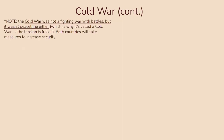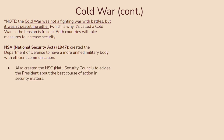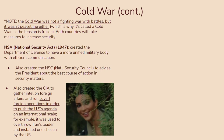The Cold War was not a fighting war with battles, but it wasn't peacetime either — the tension was frozen. Both countries took measures to increase security as if preparing for war. For example, the National Security Act in 1947 created the Department of Defense for a more unified military body, the NSC to advise the president on security matters, and most notably the CIA to gather intel on foreign affairs and run covert foreign operations to push the American agenda internationally — for example, being used to overthrow Iran's leader and install a new one chosen by the US.